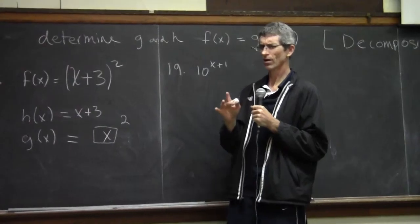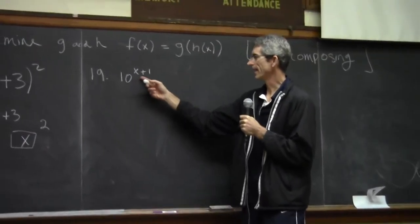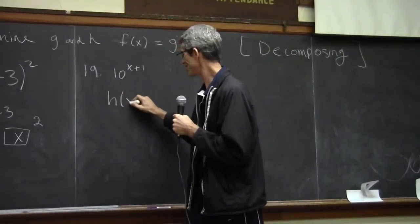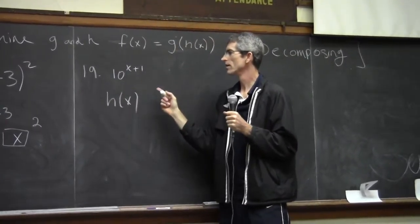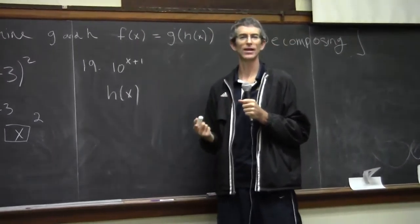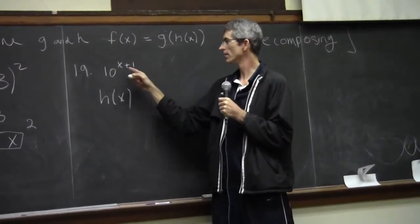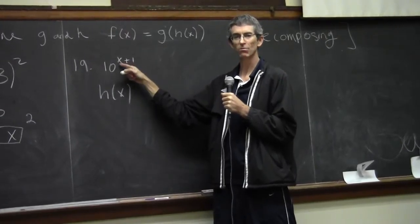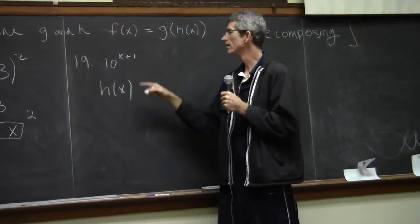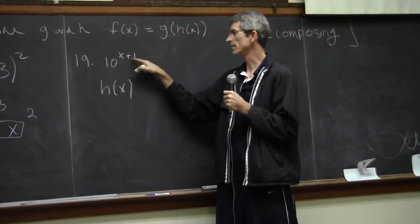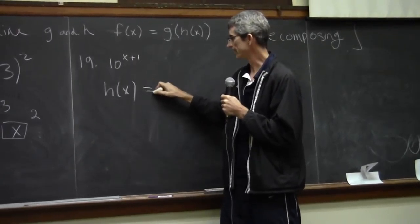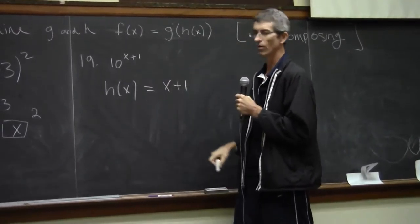Problem 19: 10^(x+1). So h(x) is the first. Order of operations - you've got an exponent raised to a power. It's one of those things somebody said in class yesterday: implied parentheses, right? Isn't it implied that you would do the x + 1 first? If you knew what x was, if I told you x was 7, then I would do 7 + 1 is 8, and then 10 raised to the 8th power. So I want to do this part first. That's my function: x + 1.